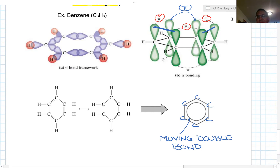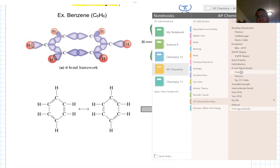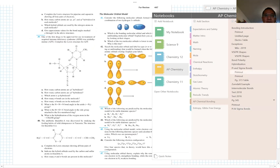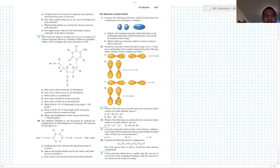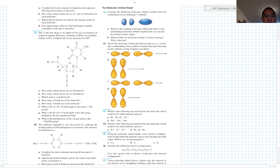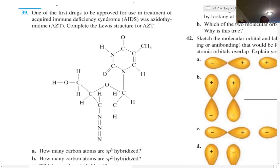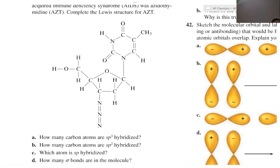I'm going to give you a quick example of a typical question you would see — this is from the ninth edition. A typical question would be: how many carbons are SP3 hybridized? SP3 hybridized means that there are four bonds attached. So here, counting them: one, two, three, four, five, and six — there are actually six SP3 carbons. For the CH3 group, we need to break it down into C-H-H-H, which is why it's trickier.